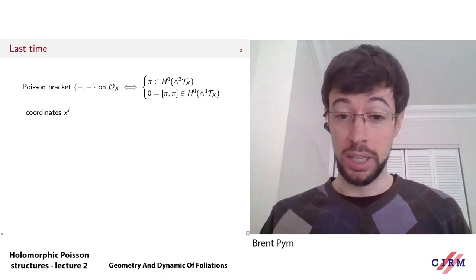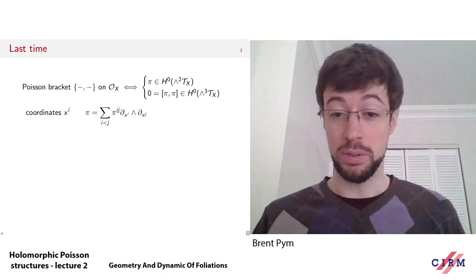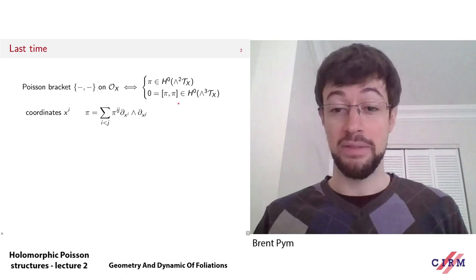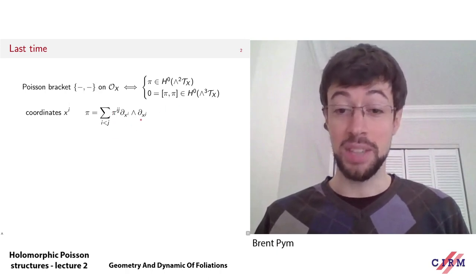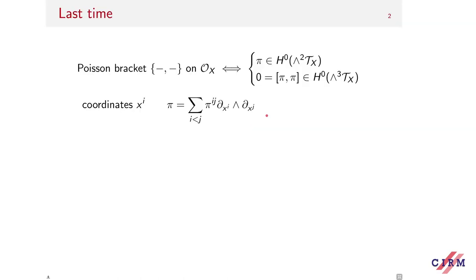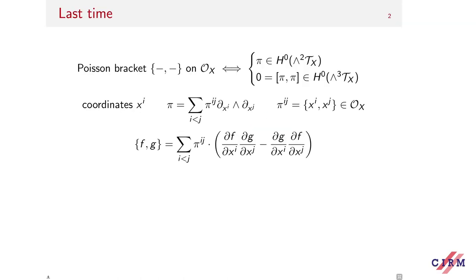In local coordinates on this manifold, we can write any bivector as a sum of components pi^{ij} times the basis vectors ∂/∂x_i and ∂/∂x_j. The Poisson bracket is given in local coordinates by taking the derivatives of f and g with respect to the coordinates and skew-symmetrizing as indicated by the wedge product, then multiplying by the component functions, which are just the Poisson brackets of the coordinates x_i and x_j.